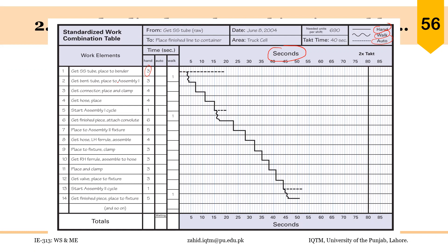The first activity is to get a stainless tube placed to the bender — it is performed by hand. You can see get bend tube and so on. Before that activity there is some walking involved. The solid line shows activity performed by hand and the dotted line shows activity performed automatically. We place the tube in the bender and the bending automatically performs — that's why we show the dotted line. Then there is walking and something done by hand, such as placing and clamping to the assembly fixture. All horizontal solid lines show something done by hand, dotted lines are for automatic cycle, and wavy lines are for walking.